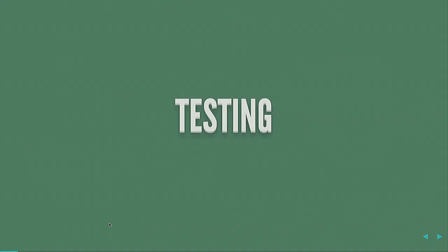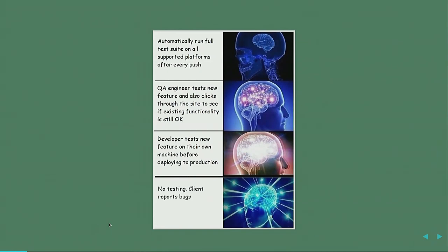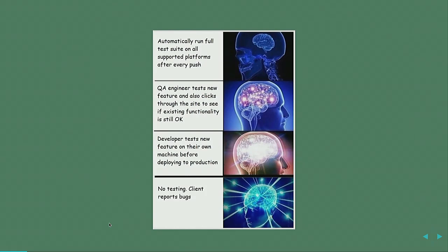So, testing. I'm going to talk a little bit in the beginning about testing in general and how you can apply it in your daily work. I have this little infographic that I found on the internet that nicely highlights four different ways that teams tend to use testing. First, you can automatically run a full test suite on all supported platforms after every push in Git. Another way is having a QA engineer who tests new features and clicks through the website to check for regressions. Or you can have developers testing new features on their own machines before deploying to production. Or finally — called the holy grail of testing — you don't do any testing and just rely on the client to report bugs.